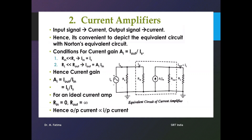For maximum current flow, we want the source current to flow maximally into the amplifier. The maximum current should flow through the input resistance, and this can happen if the input resistance is zero. If this value is zero, the maximum current will flow through it. So the required and desirable value of input resistance is equal to zero.